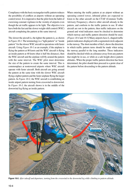Compliance with the basic rectangular traffic pattern reduces the possibility of conflicts at airports without an operating control tower. It is imperative that the pilot form the habit of exercising constant vigilance in the vicinity of airports even though air traffic appears to be light. The objective is to have both faster and slower weight shift control, WSC, aircraft completing the pattern at the same interval. The slower the aircraft, the tighter the pattern. Using Figure 10-1 as an example, if the airplane is flying the pattern at 80 knots and the WSC aircraft is flying an inside pattern at 40 knots — half the distance — then both aircraft will fly around the pattern with the same interval. The WSC pilot must determine the size of the pattern to create the same interval. This is commonplace at non-towered airports where WSC aircraft operate with faster aircraft.